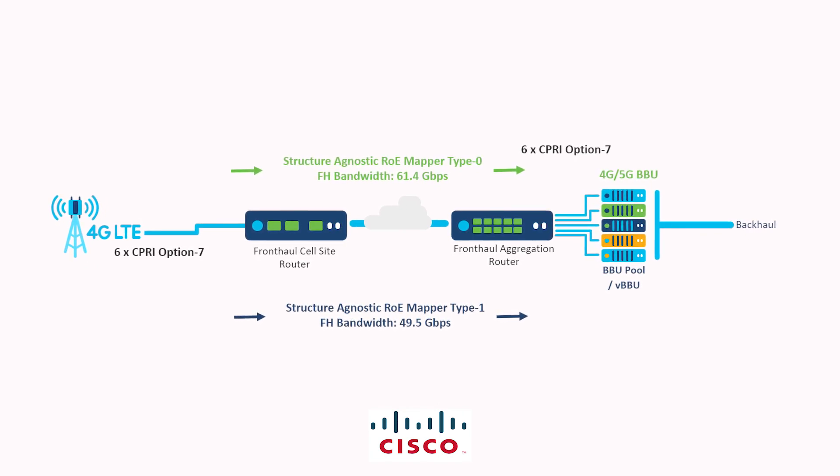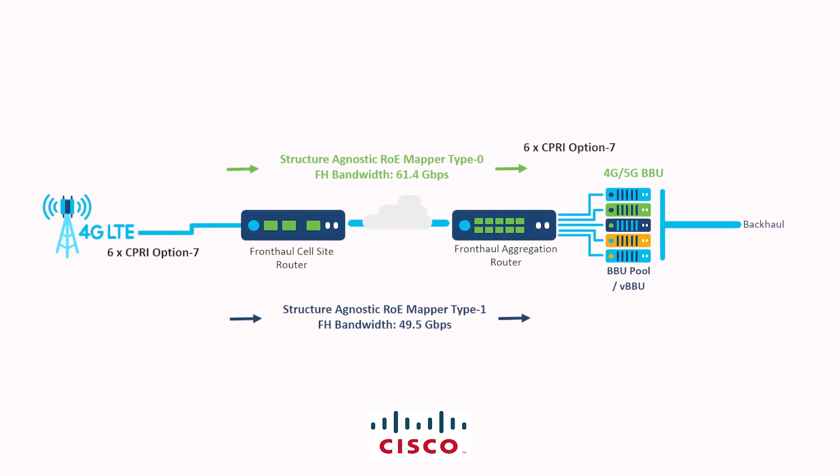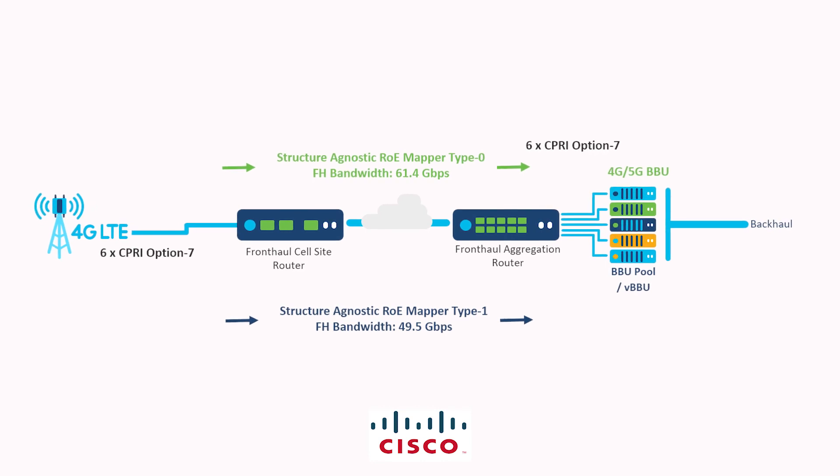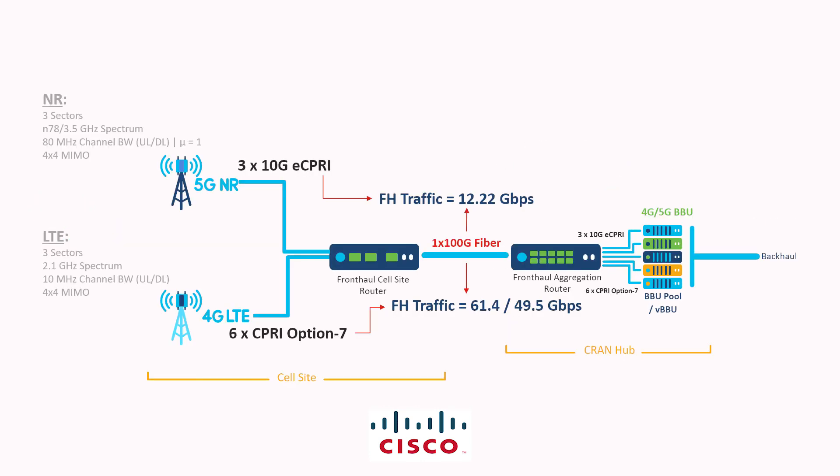Now if we didn't have NR at the cell site, we could carry this traffic using 2 × 25 Gbps links. But now we need to carry 73.6 Gbps of traffic if we have implemented the type 0 mapper, or 61.7 Gbps of traffic with a type 1 mapper implementation. In either scenario, we will have to use 1 × 100 Gbps fronthaul link. You could argue about having 3 × 25 Gbps links, but it is better to keep some buffer for future deployments.